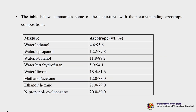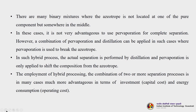Mixtures of an organic solvent with water exhibit an azeotrope in the composition region of the pure organic solvent. Hence it is very advantageous to use pervaporation to dehydrate these types of mixtures. A table lists some of these mixtures with their azeotropic compositions: water-ethanol forms an azeotrope at 4.4/95.6; similarly water-isopropanol, butanol, dioxane, acetone, hexane, and others. There are many binary mixtures where the azeotrope is not located at one of the pure components but somewhere in the middle, making complete separation by pervaporation less advantageous.